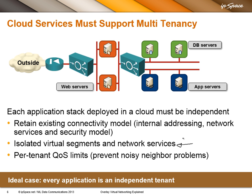We also have to provide quotas or QoS limits per tenant to prevent the noisy neighbor problem. In a cloud environment, numerous tenants share the same infrastructure. If one tenant is generating too many disk requests, consuming too many CPU cycles, or too many network resources, then all the other tenants suffer. So we need QoS with either shaping, policing, or whatever mechanism you use, on either a per-tenant or per-VM level.